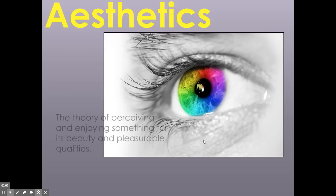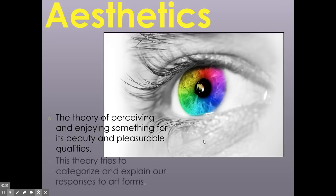Aesthetics. Very important that we talk about aesthetics. Aesthetics is a theory of perceiving and enjoying something for its beauty and pleasurable qualities. It's a branch of philosophy where we talk about why is something beautiful or why is something not beautiful? Why is something ugly or why is something not ugly? And even then, could something be beautiful and not enjoyable? Can something be ugly and enjoyable? This theory tries to categorize and explain our responses to art forms. Some people respond to or consider some things to be beautiful while others consider them not to be.